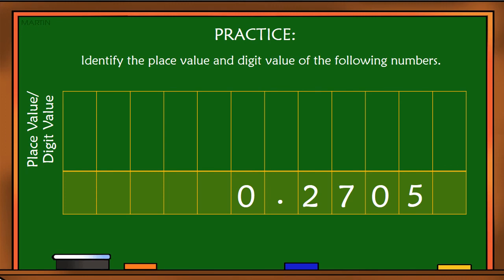Let's do the place values first. Two is tenths, seven is hundredths, zero is thousandths, and five is ten thousandths.